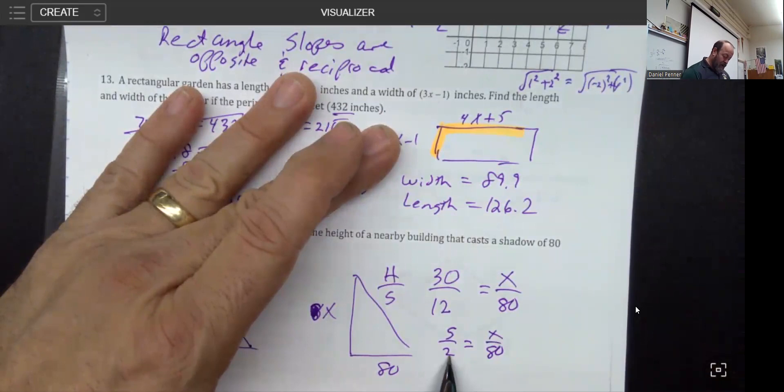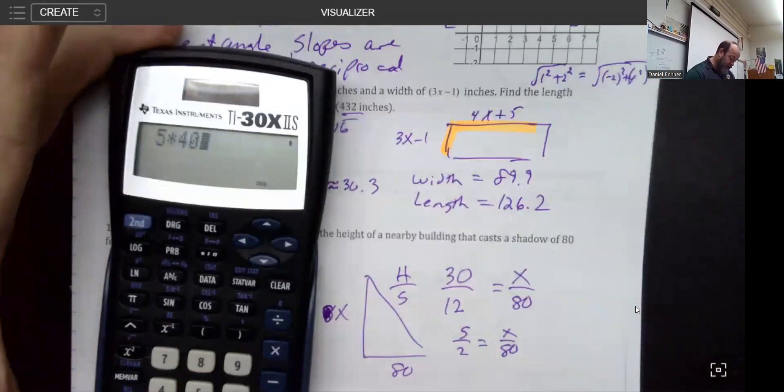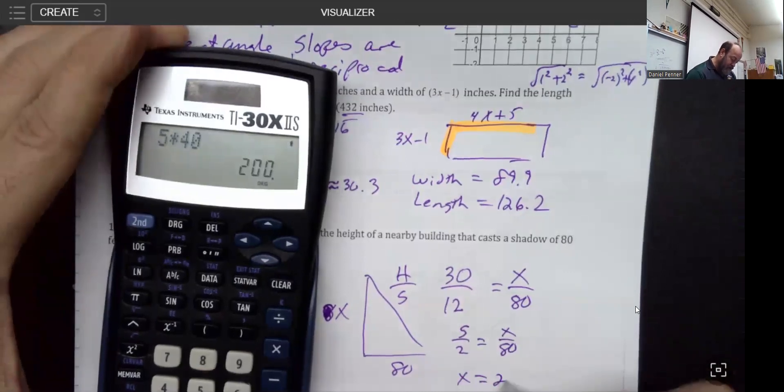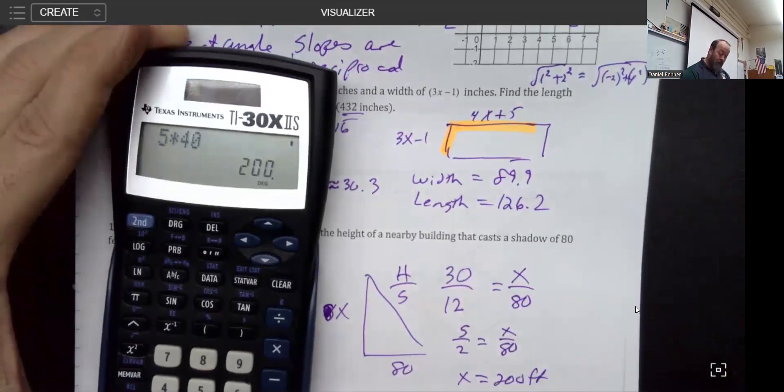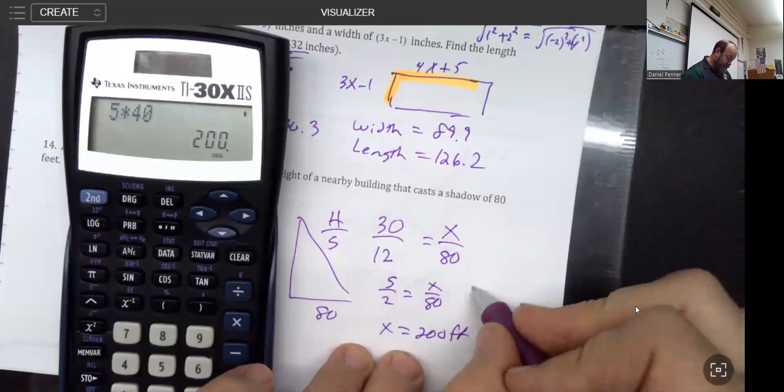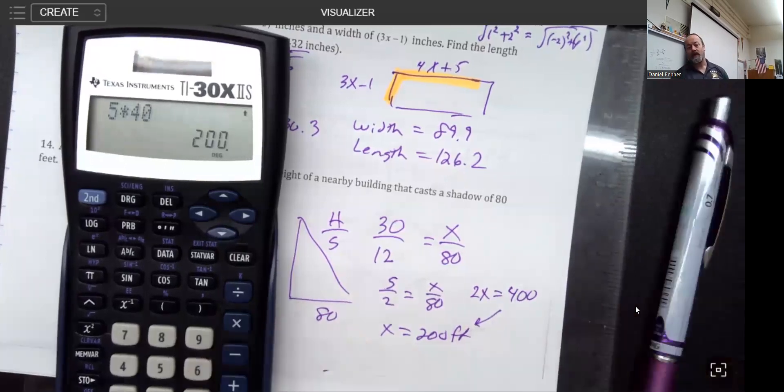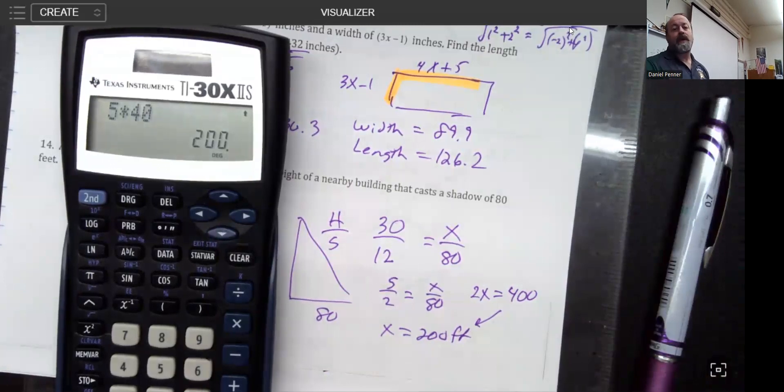I'm going to say 5 over 2 equals x over 80, and I noticed immediately that this is 40 times as big as that. So all I need to do is I can take the 5 and multiply it by 40, and I got a height of 200. It's a 200-foot tall building. Or if you wanted to, we could cross multiply and get that, and we're going to get the same answer either way we do it. So hopefully that's good. That's page number 3. We'll see you back in class. Goodbye.